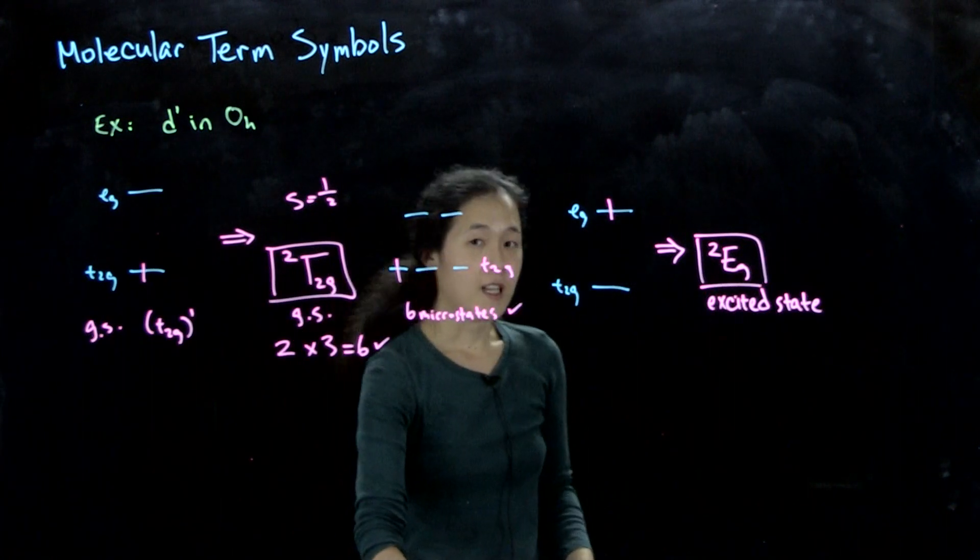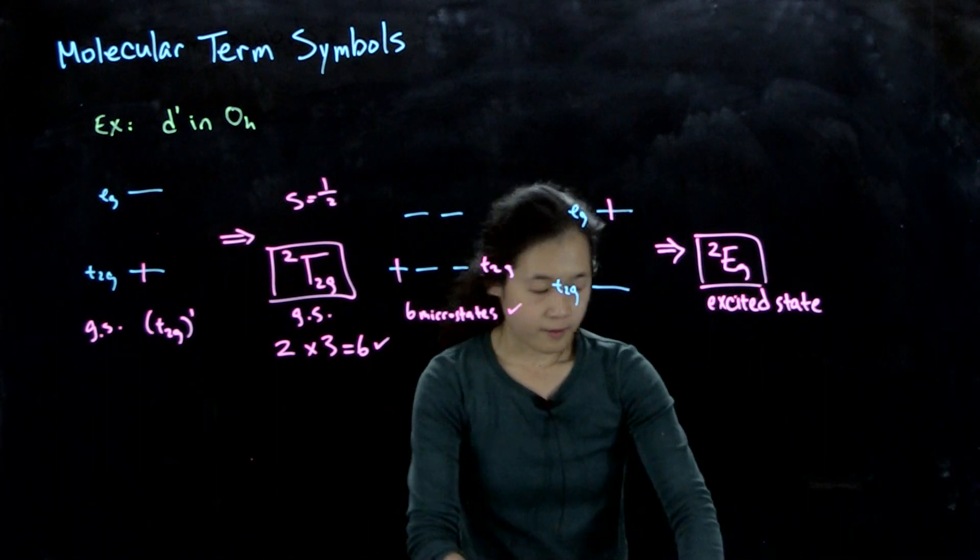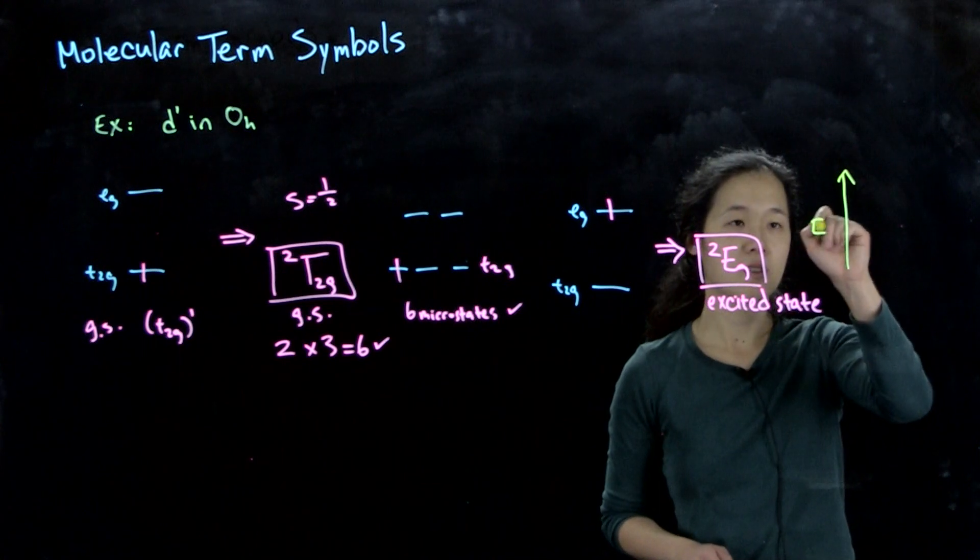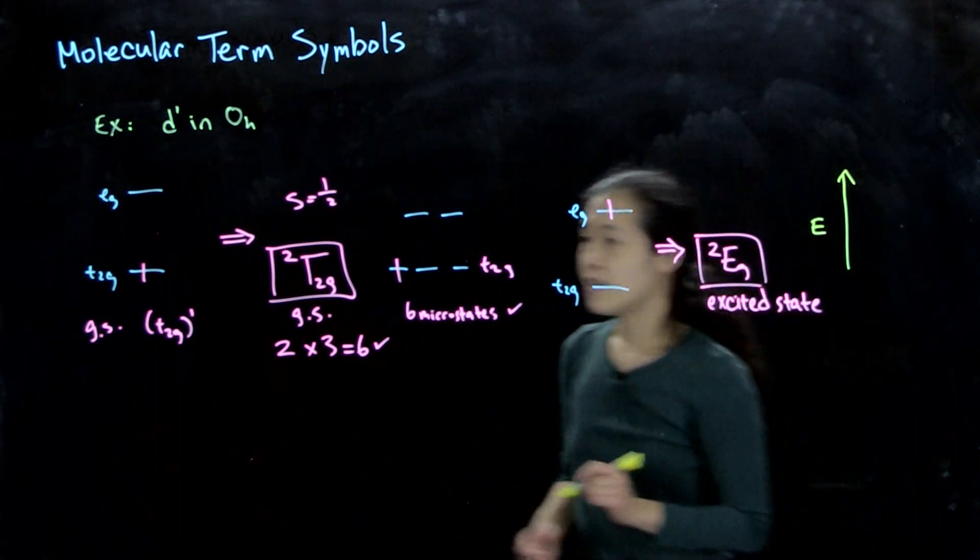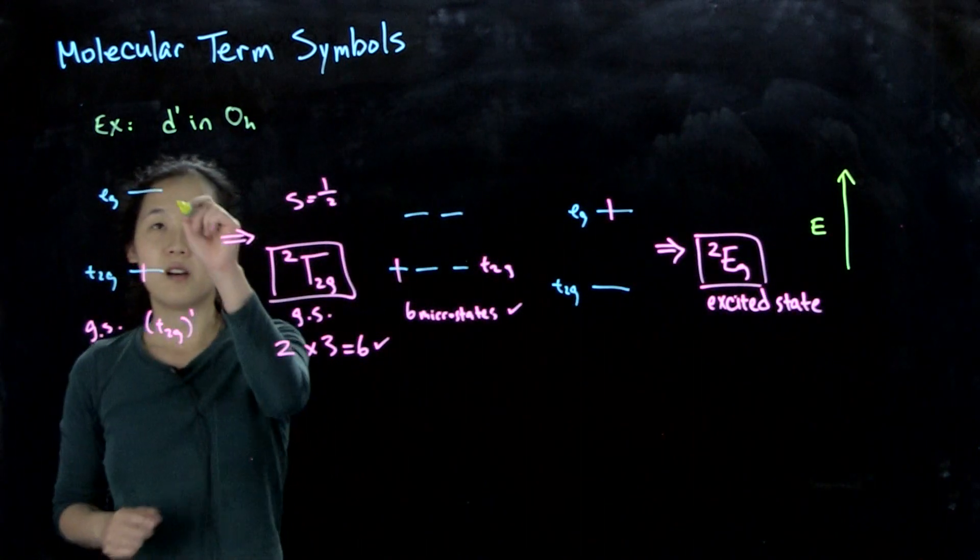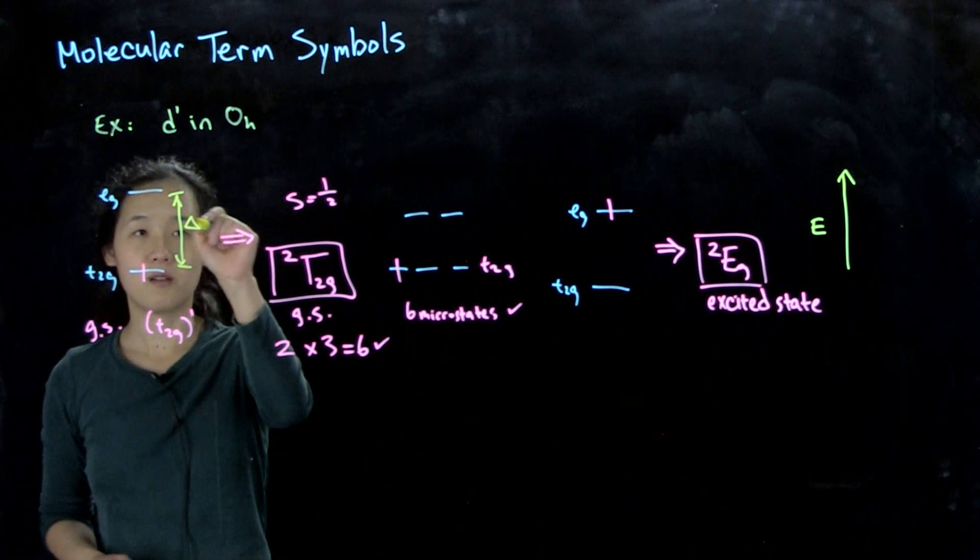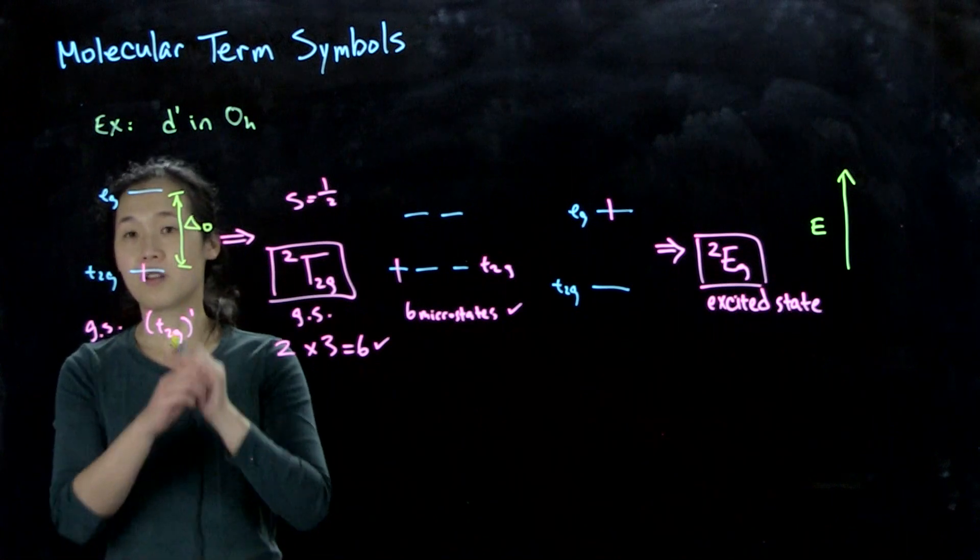And finally, if you want to look at the energies of these states, we could draw our axes. So here's energy. Keep in mind that the eg and t2g orbitals are going to be separated off only by our ligand field. So ΔO, which is what we talked about here, our ligand field splitting.